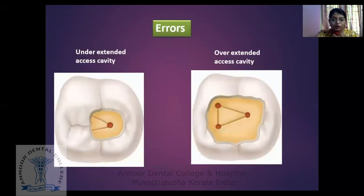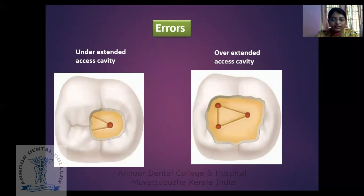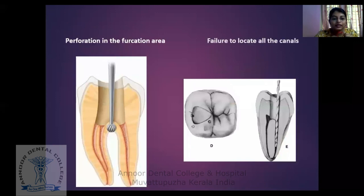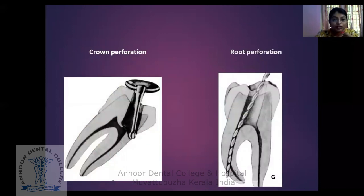The procedure is the same as for premolars, but entry should be done through the central portion. Once you get the dip, you have to go for de-roofing. The errors include under-extended and over-extended access cavity. With an under-extended cavity you can only locate one or two canals, but once you fully unroof the pulp chamber you will be able to see all canal orifices. Over-extended cavity compromises the strength of the tooth. Perforation and failure to locate the root canal are also main concerns, including crown perforation and root perforation, which can occur if access opening is not done properly.